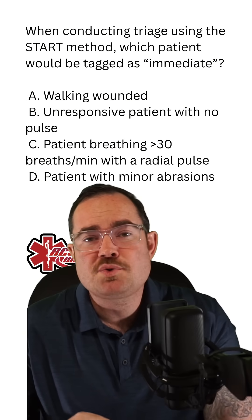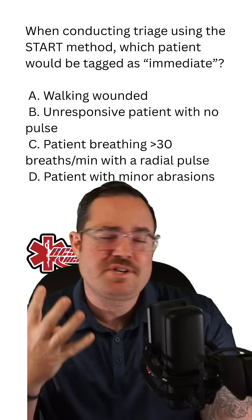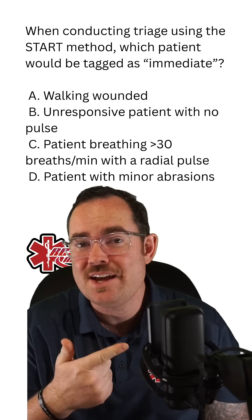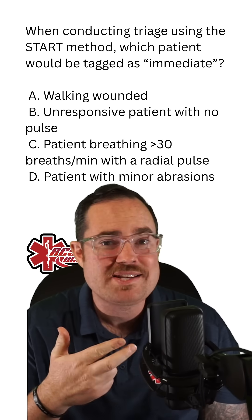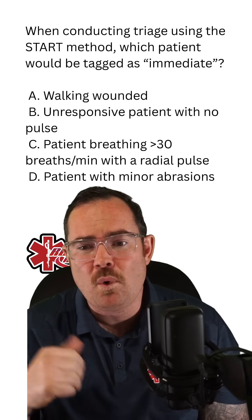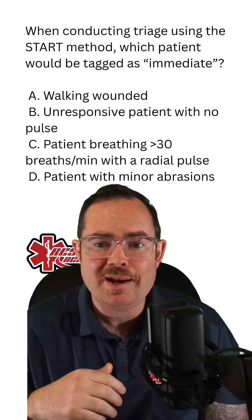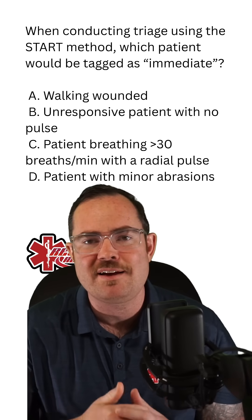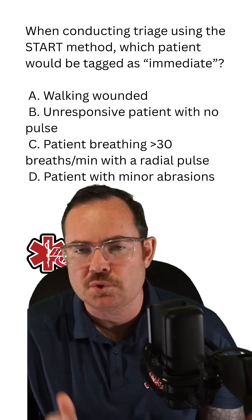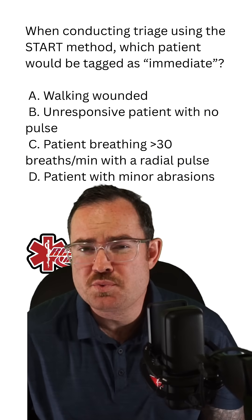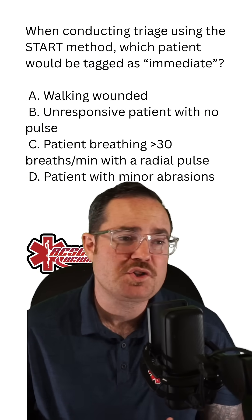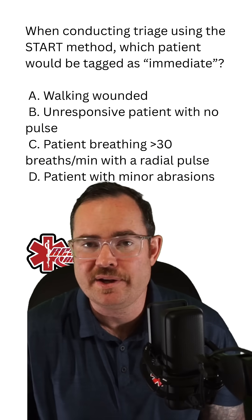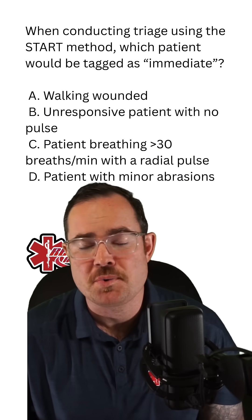With START triage, we have four different colors. The patient is either going to be a green tag, a yellow tag, a red tag, or a black tag. Walking wounded and a patient with minor abrasions are both obvious green tags. We will ask them to walk to a designated area, which may even be our treatment area, depending on the situation.